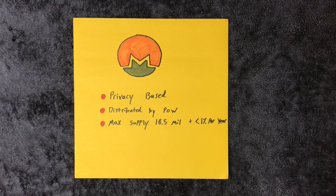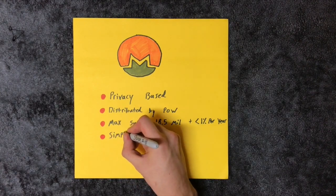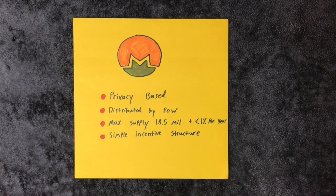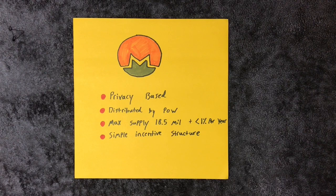It has privacy by default. You cannot turn off this feature. It's hard-coded into the protocol. There are no masternodes, staking, or block reward splits. Only proof-of-work mining similar to Bitcoin, something that is important in a currency.